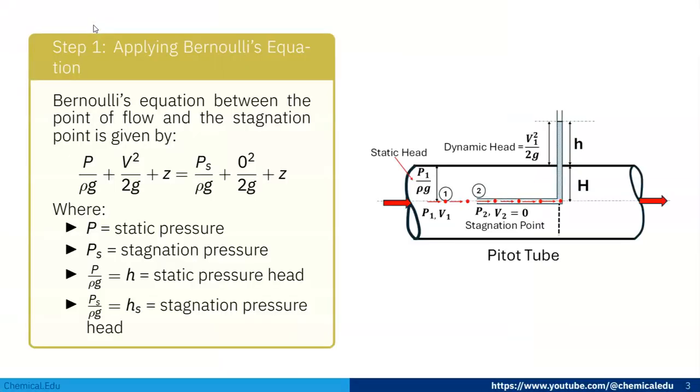Step 1: Applying Bernoulli's equation between the point of flow and stagnation point. So point 1 and point 2, where at point 2, v2 is zero and pressure is p_s or p2. As it is horizontal, z1 equals z2.